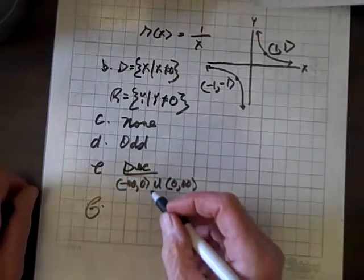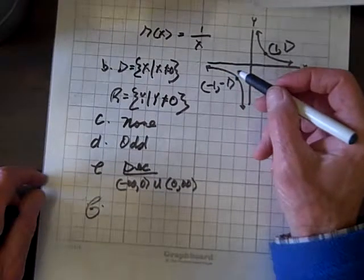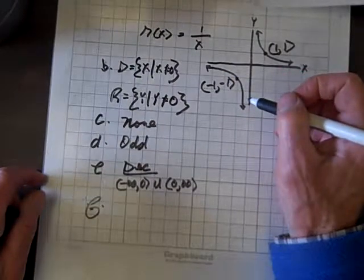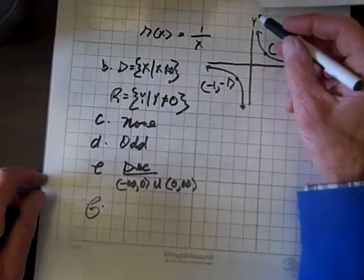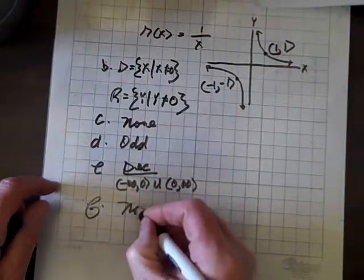As to absolute max or min, there is not an absolute maximum, nor is there an absolute minimum. This thing is going forever down and forever up, so there are none.